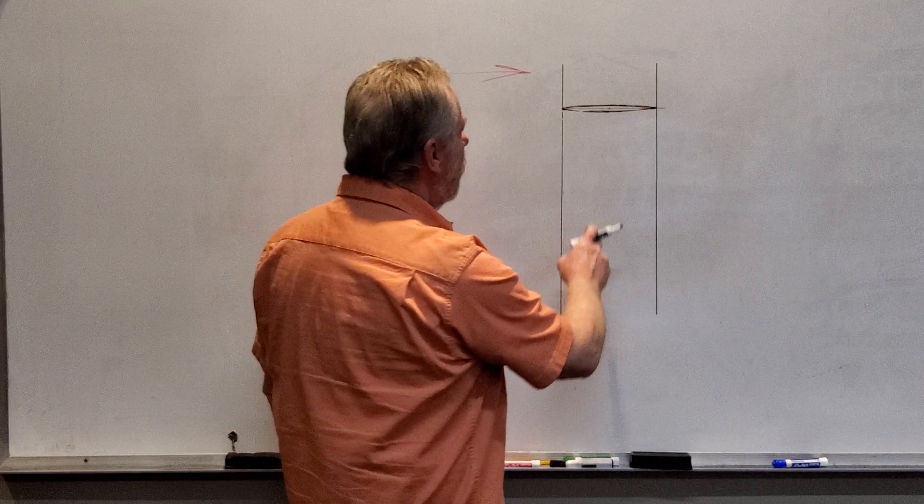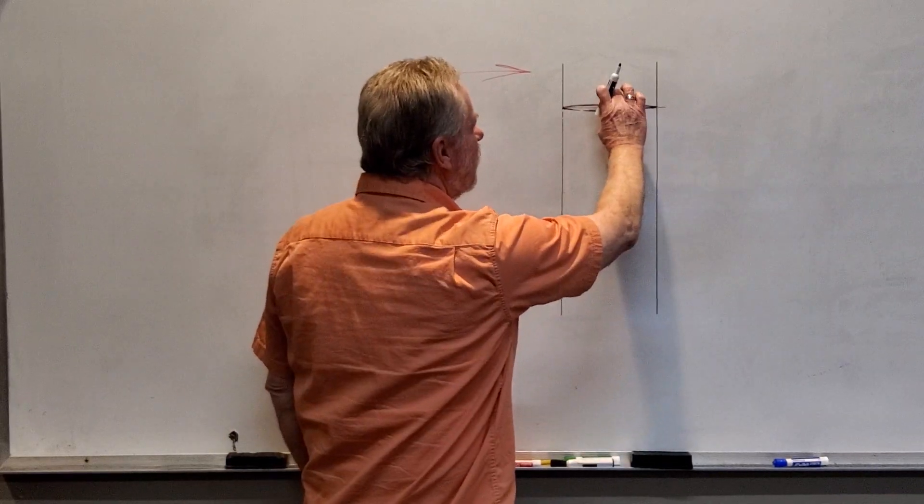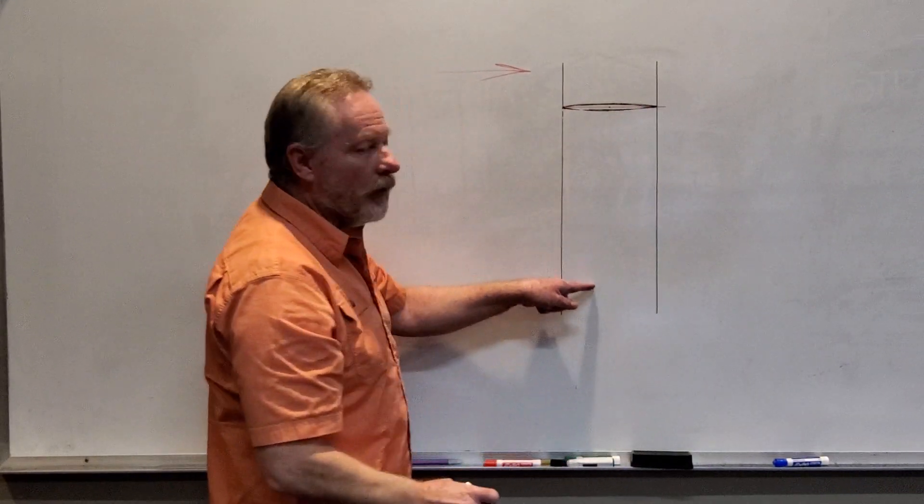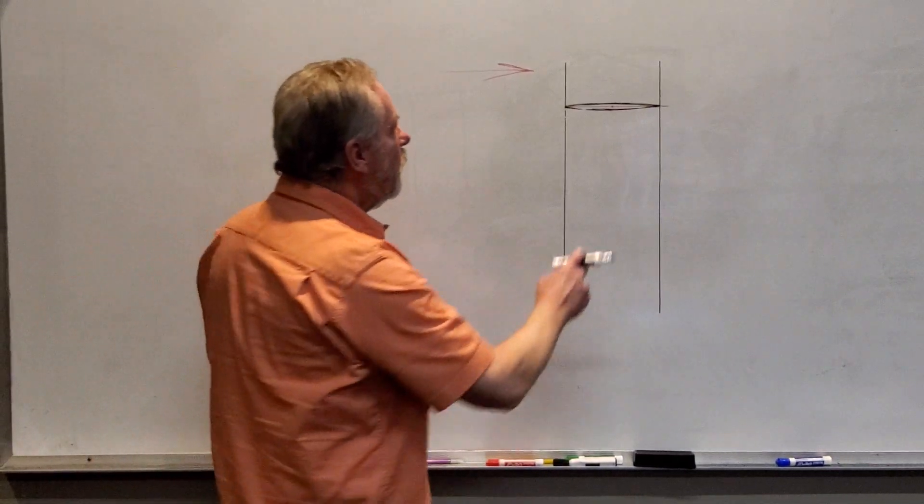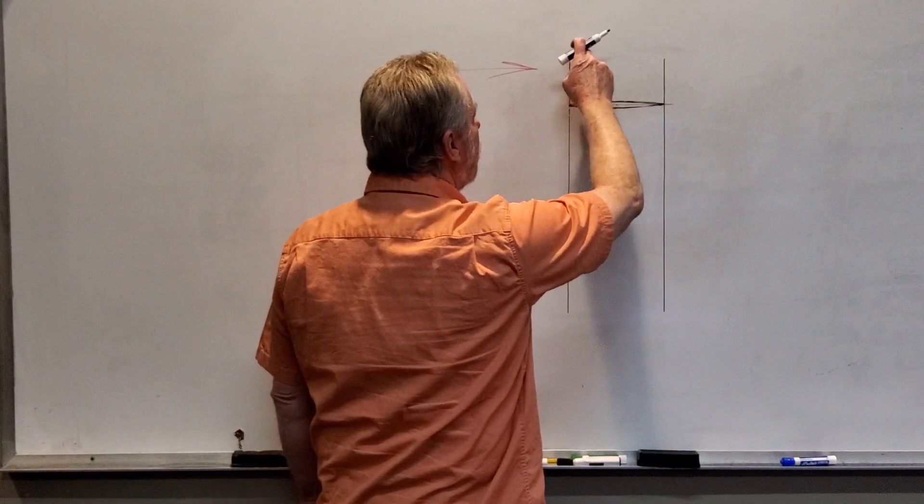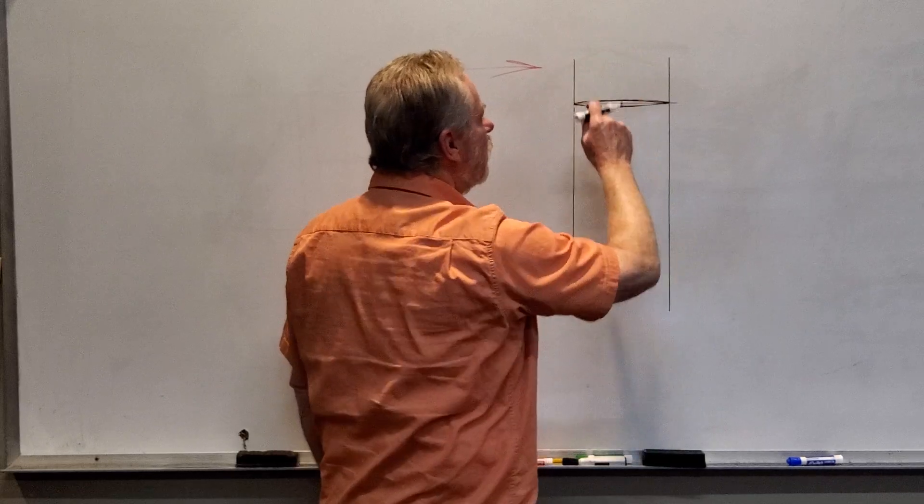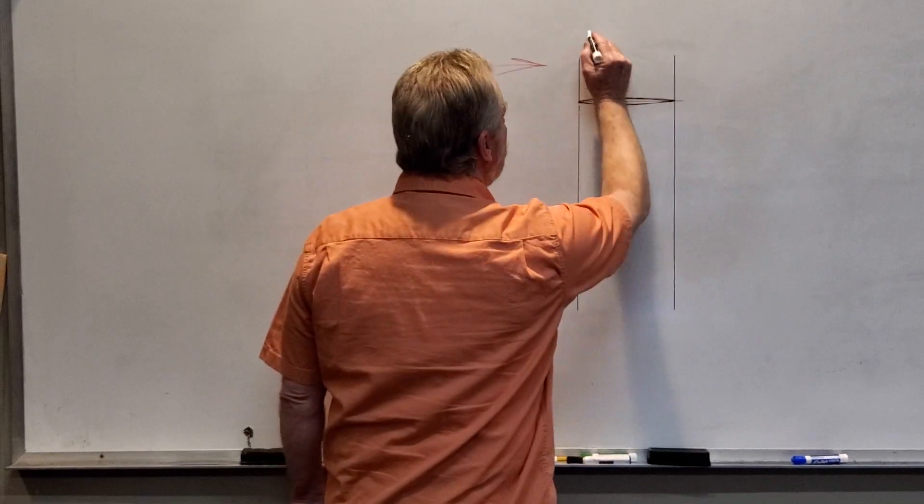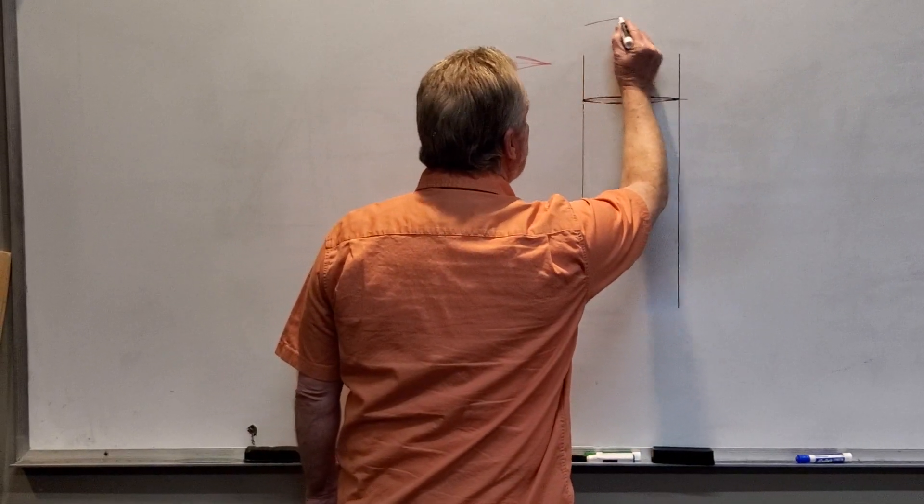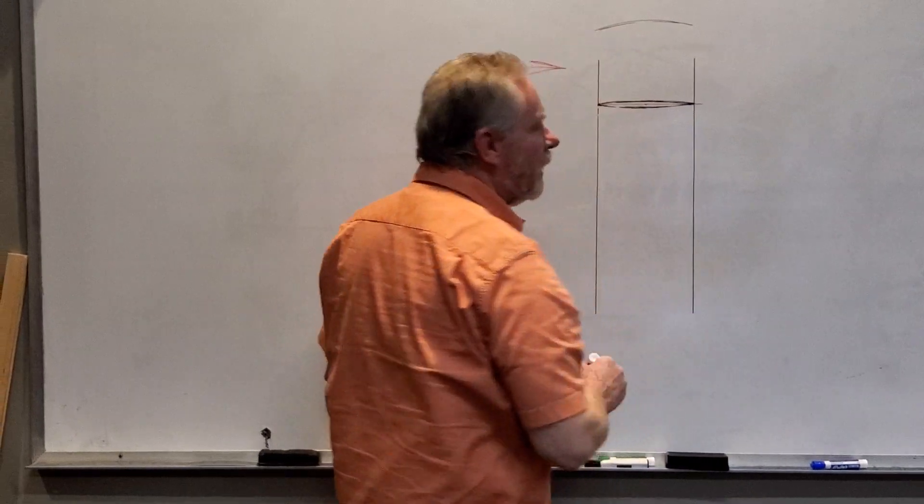Now, as we get further down, this space gets larger because you can see more and more of the top. If we were looking at the can and it was above the horizon line, all you would see would be the front edge. So you see a curve this way, but that's all you would see.